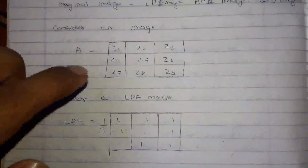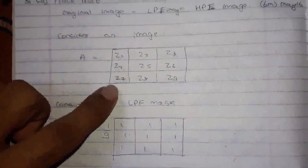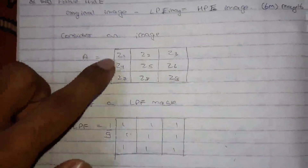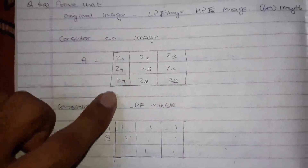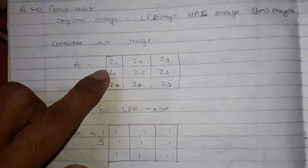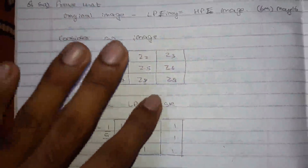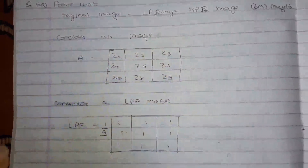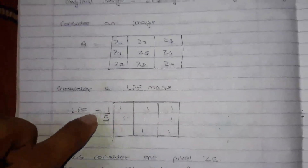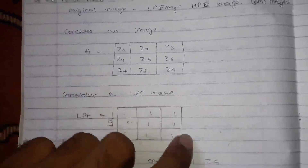Consider this is my image. I am naming the pixels as Z1, Z2, Z3, Z4, Z5, Z6, Z7, Z8, Z9. Consider this is the low pass mask. The standard low pass mask is 1/9, all 1s.